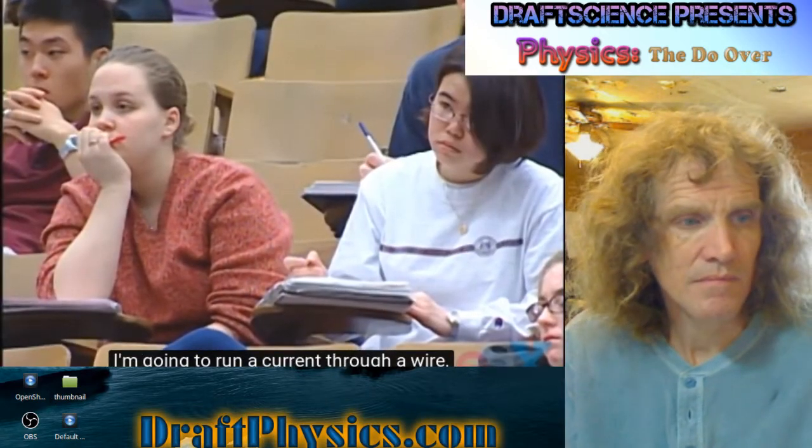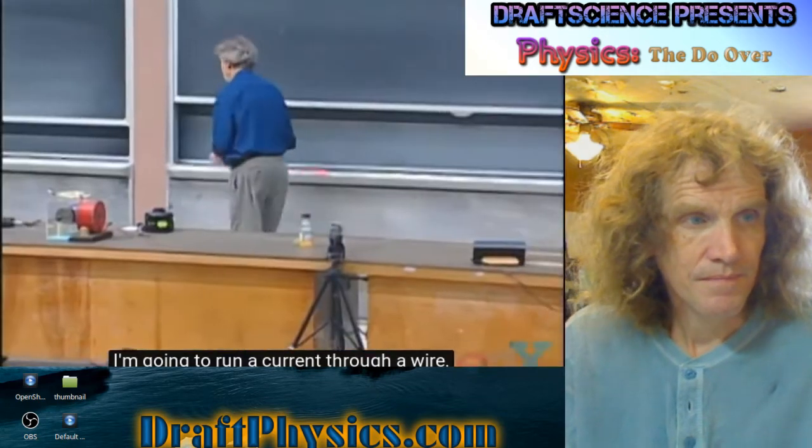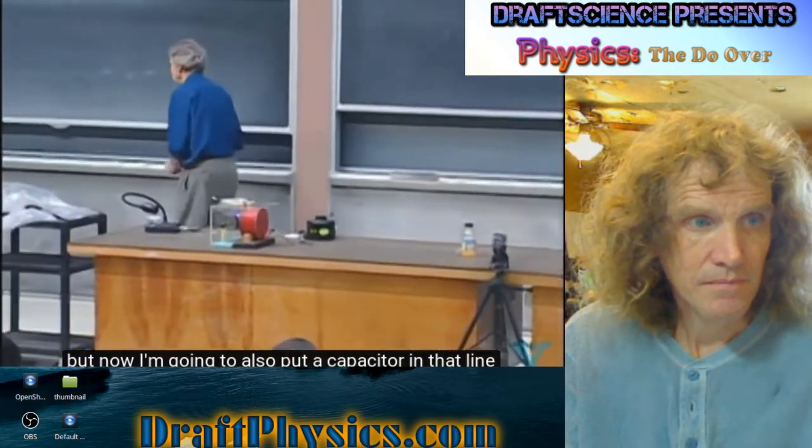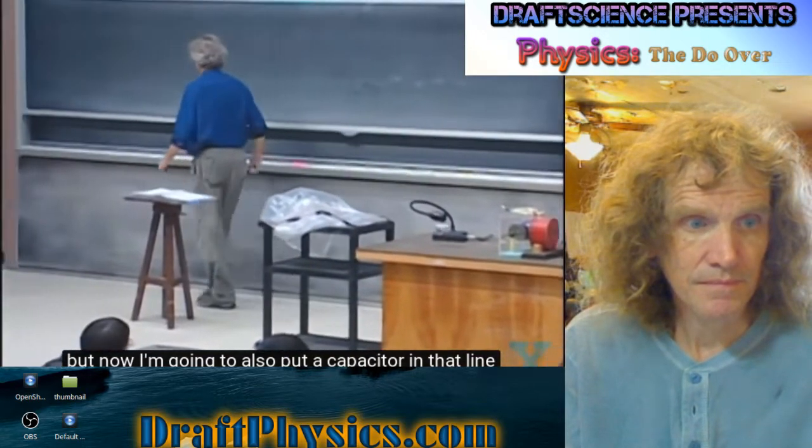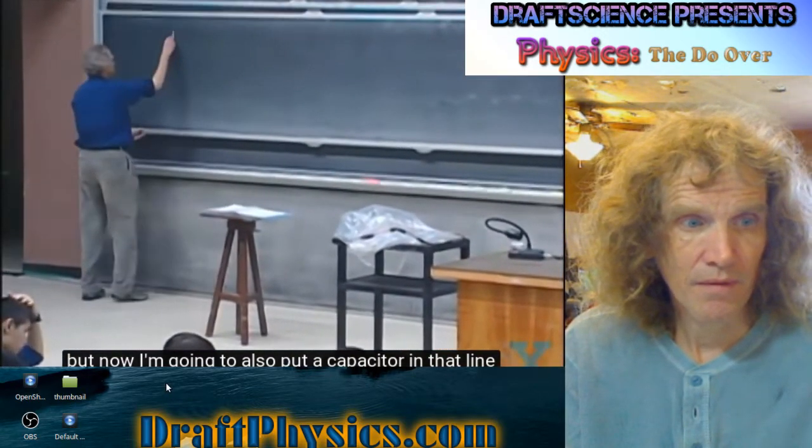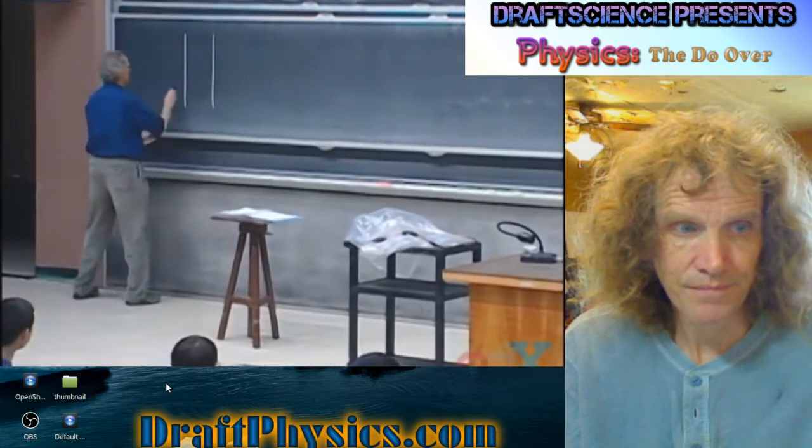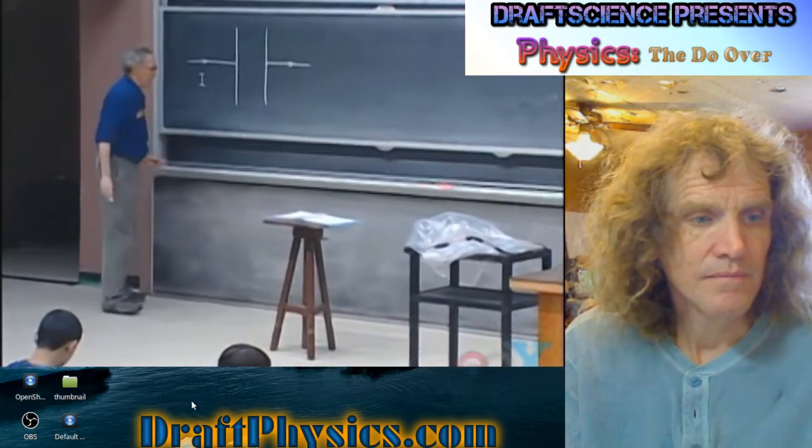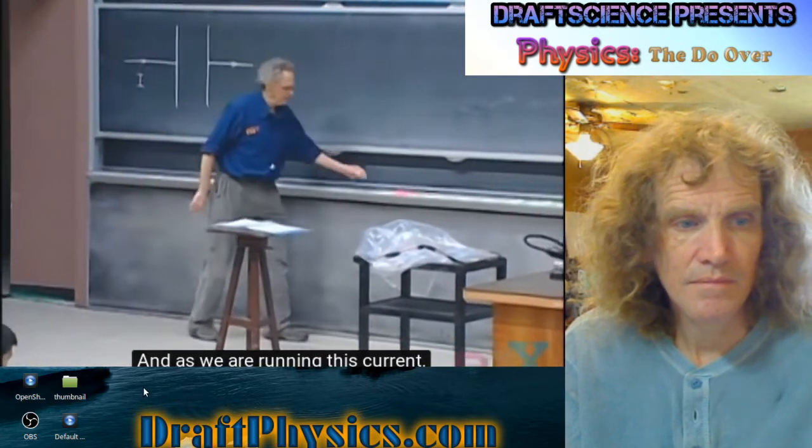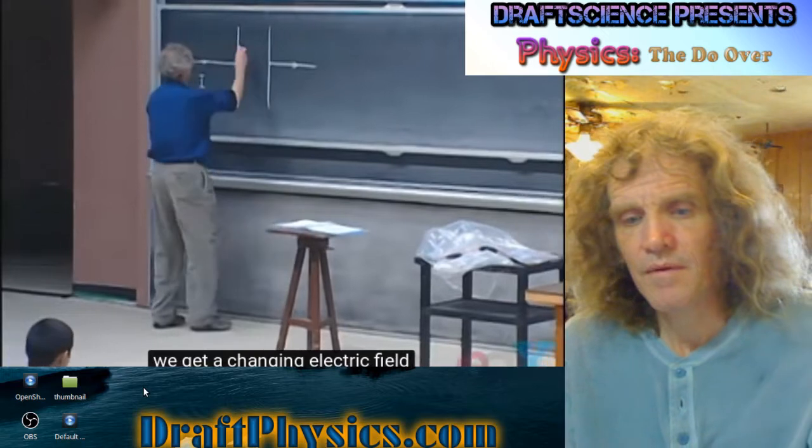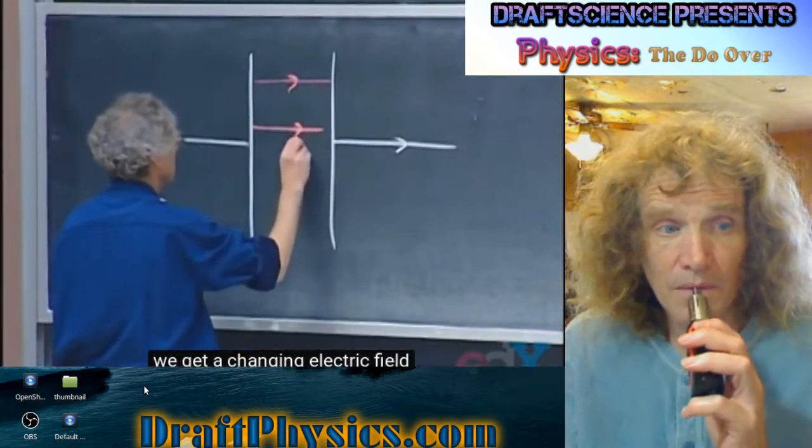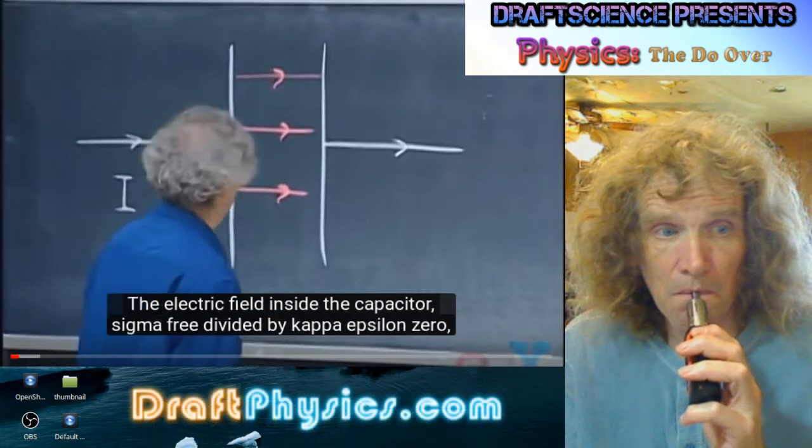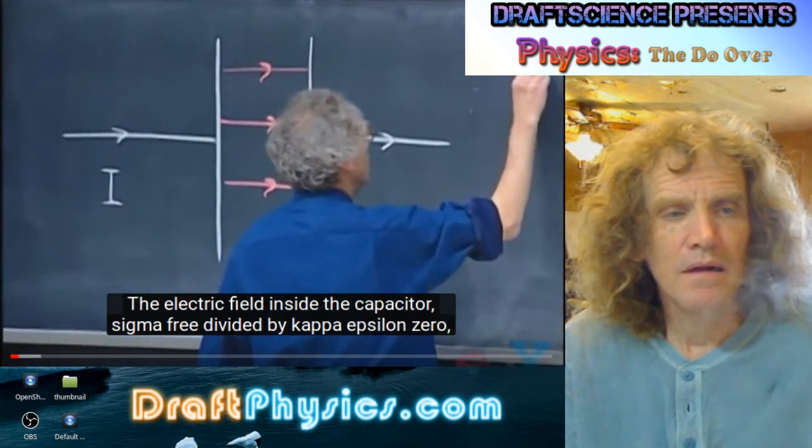I'm going to run a current through a wire, but now I'm going to also put a capacitor in that line, and so we are charging a capacitor. Here's that capacitor. Here's the wire. We're running a current I, and as we're running this current, clearly, we get a changing electric field inside the capacitor.